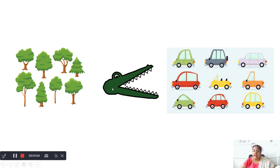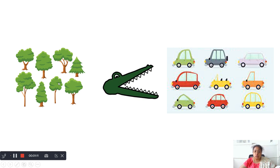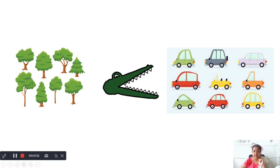The alligator or the crocodile will only open its mouth on the greater side. So the trees are lesser than cars. We are only comparing the numbers, children. 8 is lesser than 9.